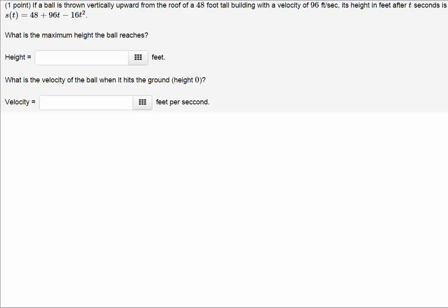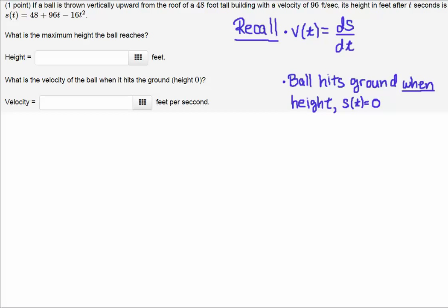Let's go ahead and solve that. I'll remind you that the velocity is the instantaneous rate of change of the position with respect to time, so it's ds/dt - the first derivative of the position function. The ball hits the ground when the height is zero.